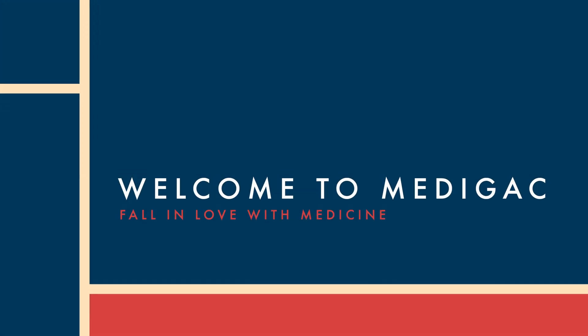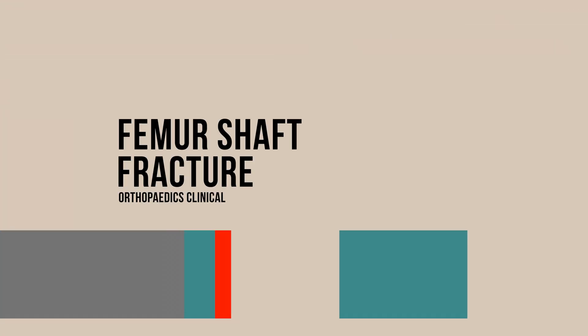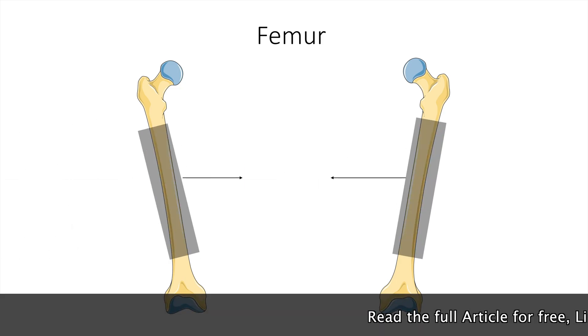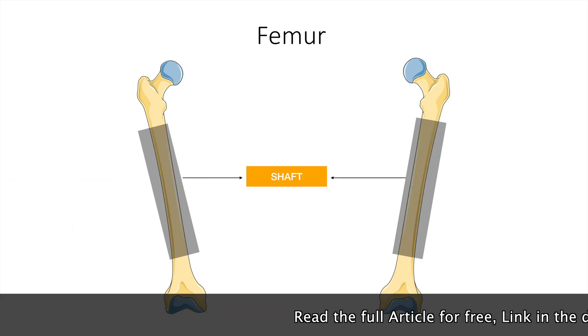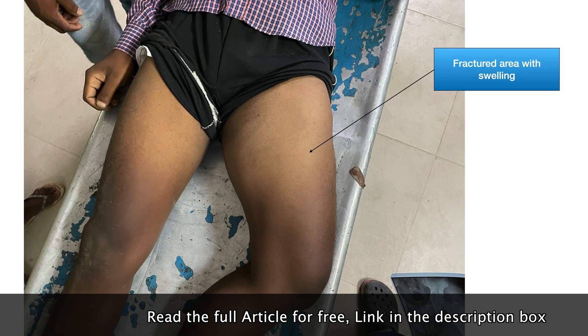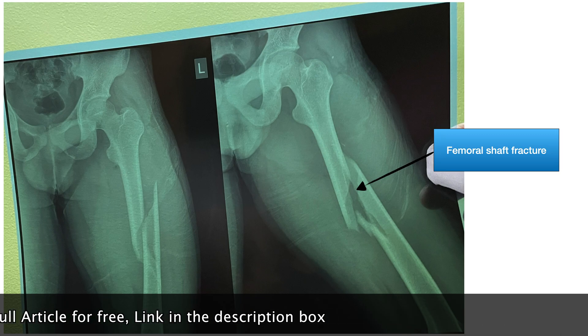Hello everyone, welcome to Medigac. Today our discussion topic is femur shaft fracture. The femoral shaft is the name given to the long, straight portion of the femur. A femoral shaft fracture occurs when any point along this length of bone breaks.